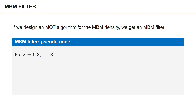Now that we understand the multi-Bernoulli mixture density, we can use it to design algorithms for multiple object tracking. Such algorithms are called MBM filters. An MBM filter has four main parts. In each time step, we start with a prediction, then we have a base update, followed by a reduction step where we can do pruning, merging and capping, and lastly we have object estimation where we extract a set of object estimates. We will learn more about these steps in the coming videos.